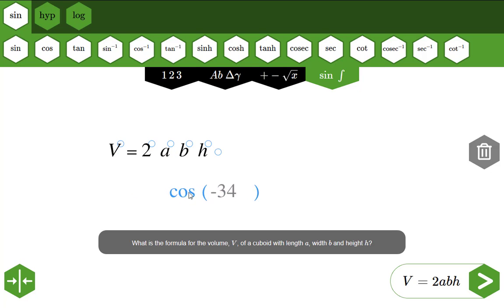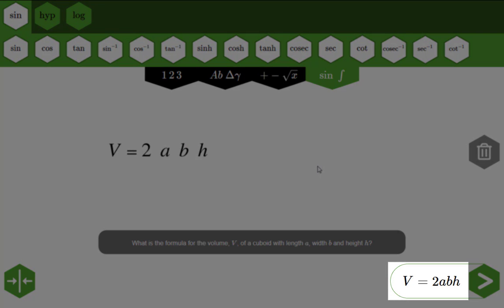Drag symbols onto the bin to remove them. You can preview your answer down here.